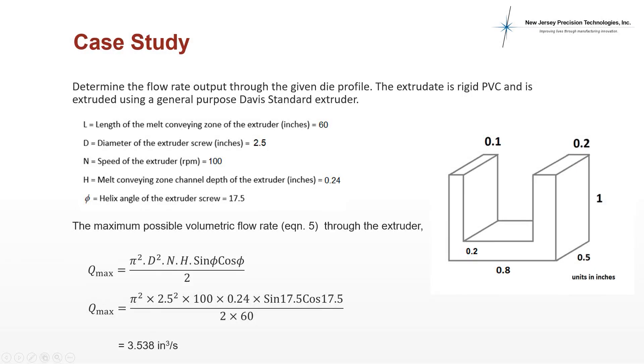We can now perform a case study to determine the output flow rate at the operating point of a given die profile. The extrudate is rigid PVC and the extruder is a general purpose Davis standard extruder. We first determine the maximum possible throughput through the extruder using equation 5.